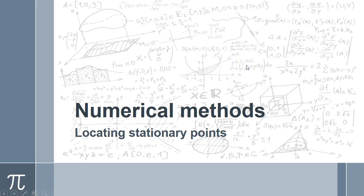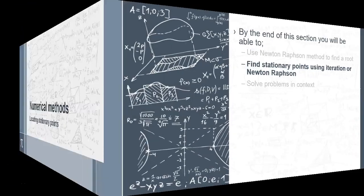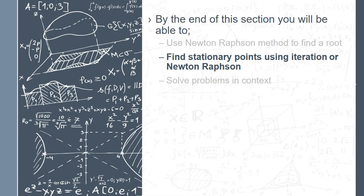Hi and welcome to the next video in the numerical methods section. We've gone through iteration and Newton-Raphson, our two methods for finding roots of equations. What we're going to be looking at in this one is how we can use it to locate stationary points. Essentially what we're doing is applying either iteration or Newton-Raphson to contextual problem solving.